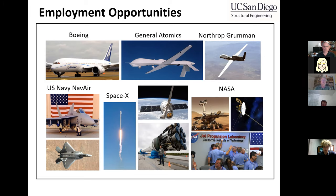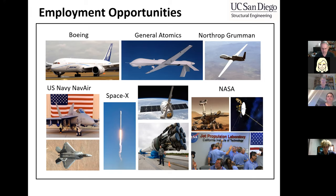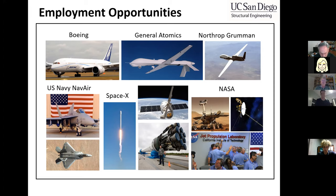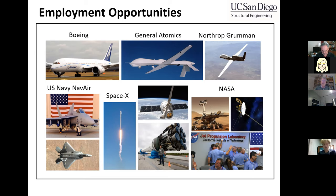NASA is another major employer. The State of California has three NASA research facilities: JPL in Pasadena known for robotics work on Mars; the Armstrong Flight Research Center in Palmdale where all the X-planes are designed, built, and flight-tested; and NASA Ames right outside Stanford in Mountain View, which has the large wind tunnels you see on the way up to San Francisco and does a lot of aerodynamics work.